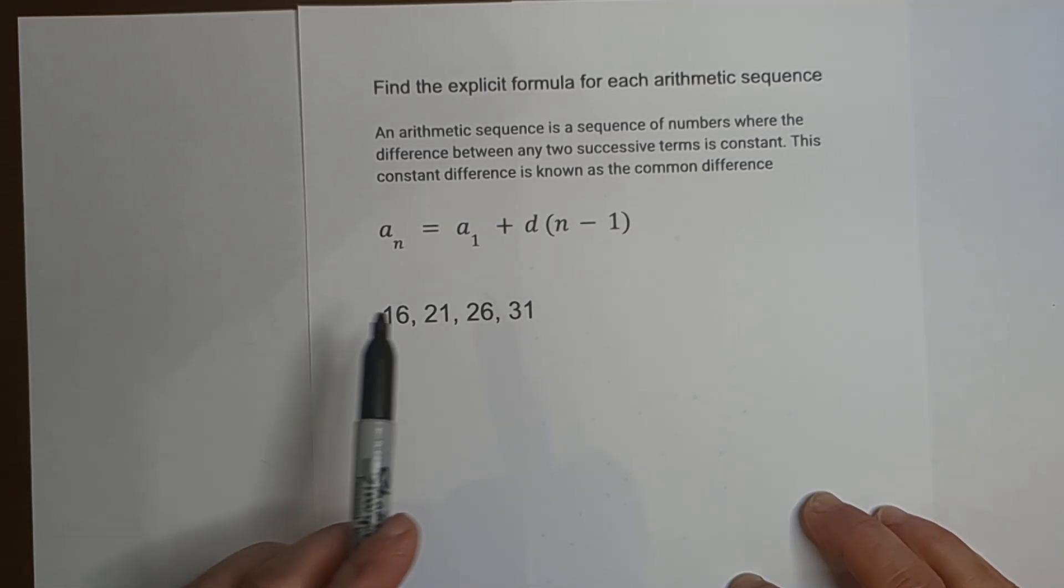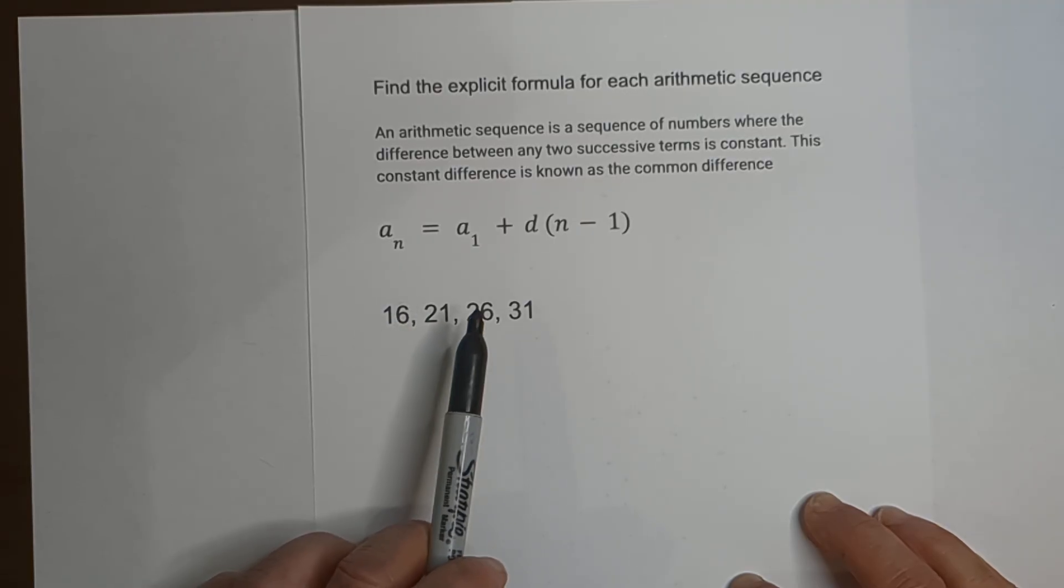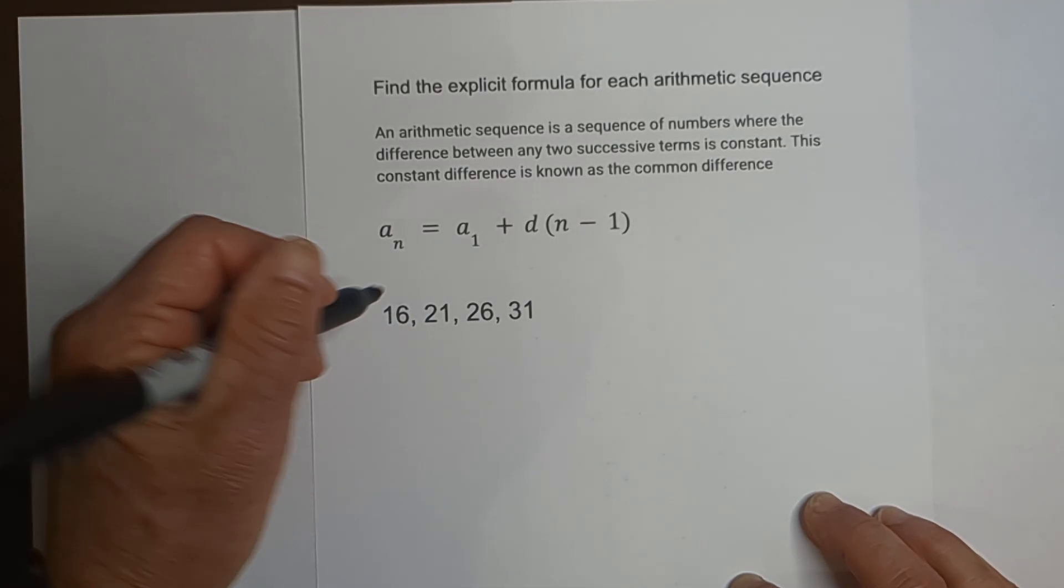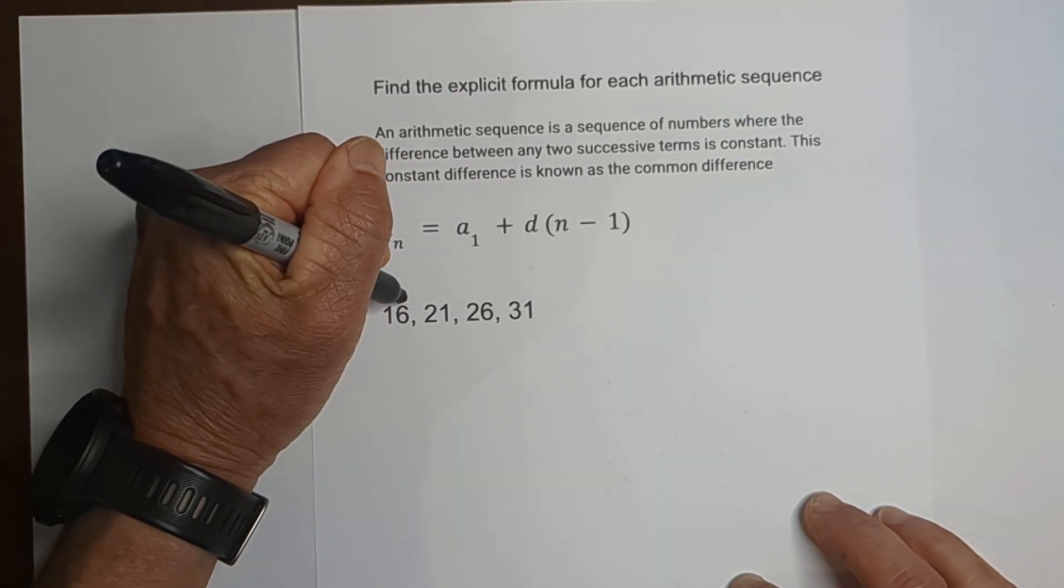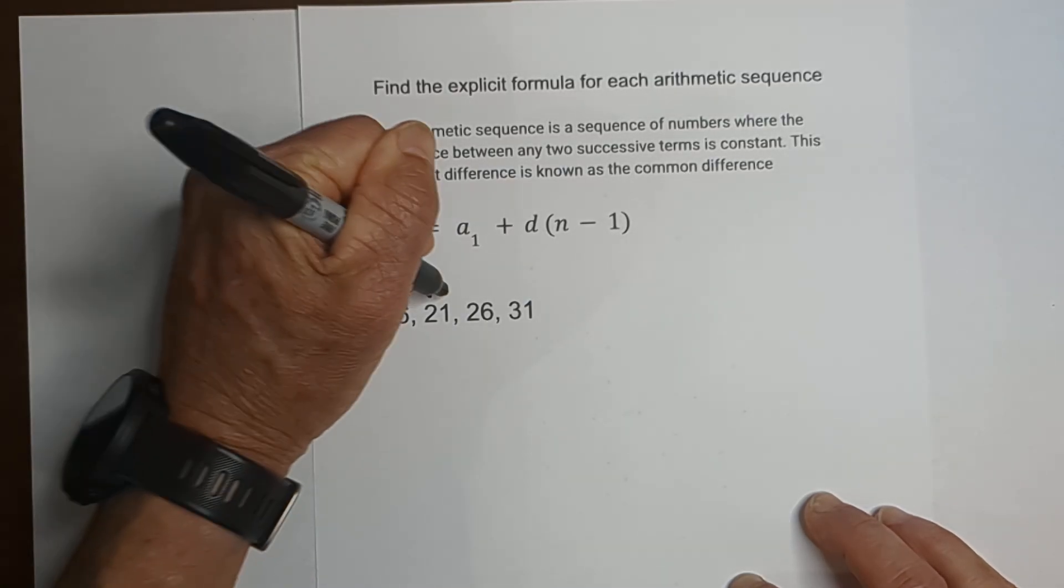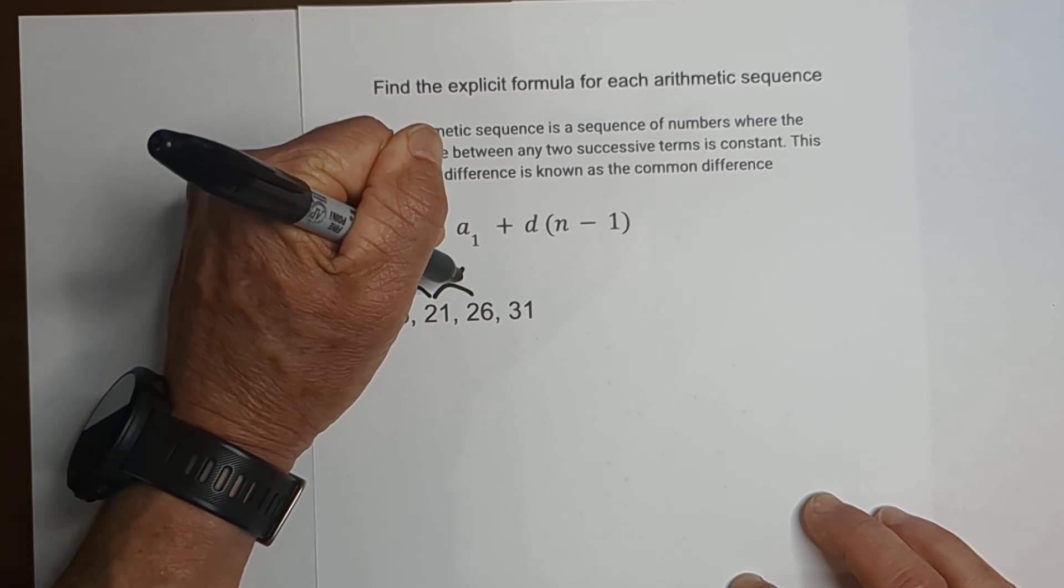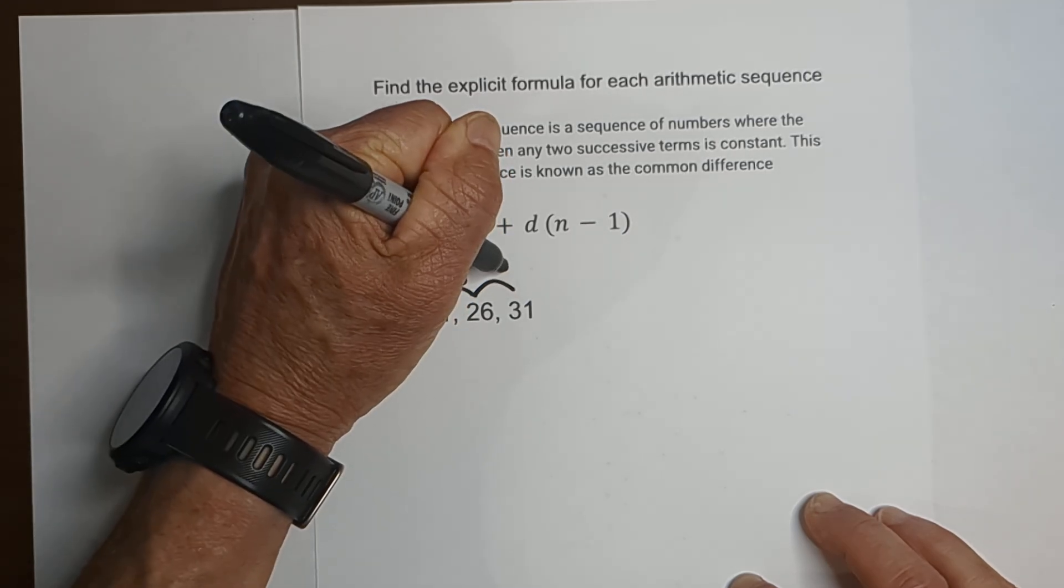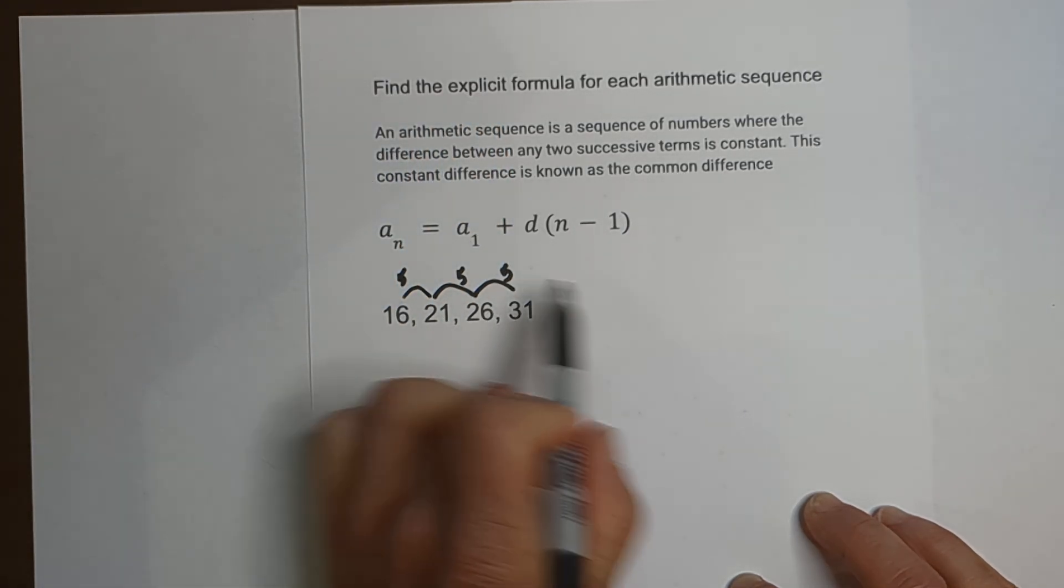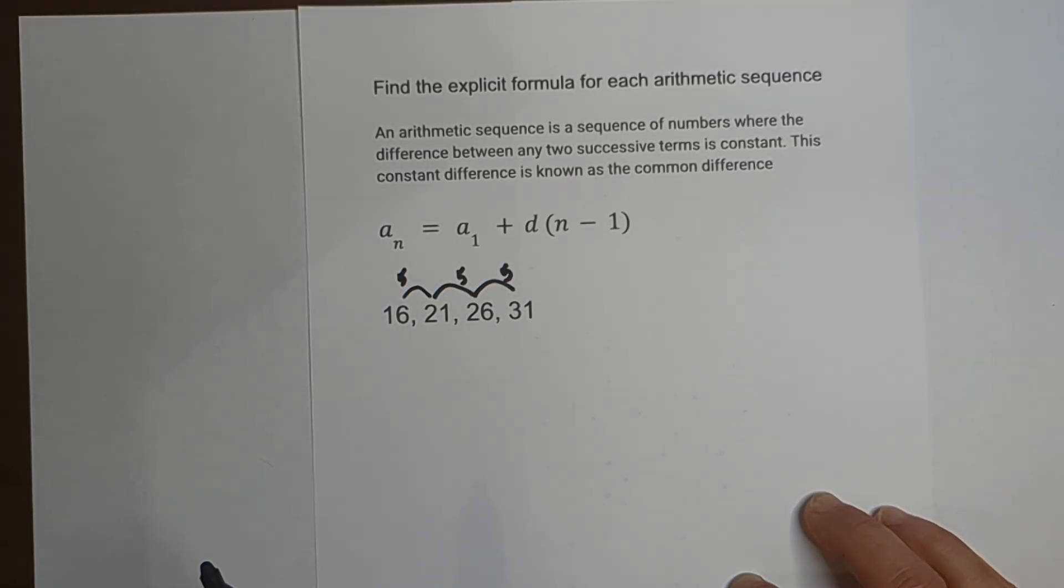We have this sequence of numbers: 16, 21, 26, 31. It's arithmetic because it goes up the same each time. If you add 5 to 16 you get 21, if you add 5 to 21 you get 26, if you add 5 to 26 you get 31. Notice that it's a constant term.